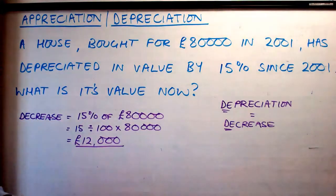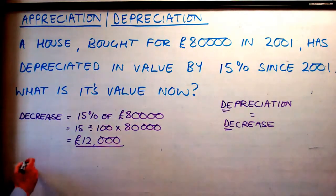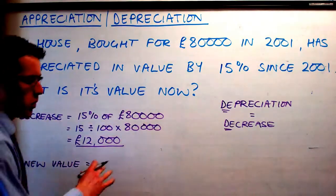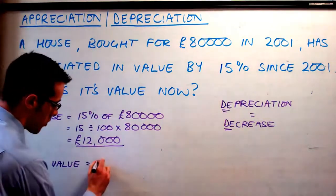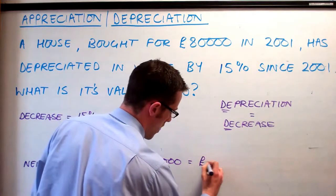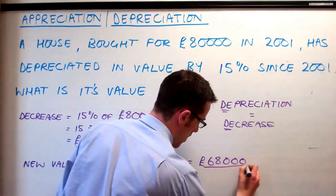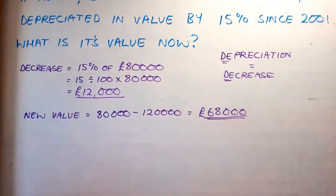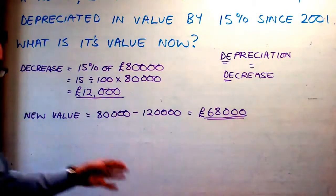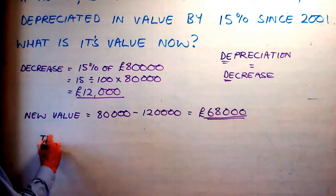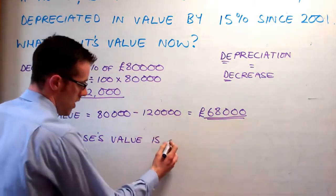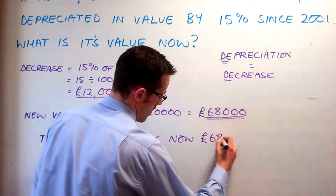The house isn't worth £12,000 — that's been the decrease, so we need to work out the new value. Just as with increase we added on, with decrease we take away. So that's £80,000 minus £12,000, leaving £68,000. The question was asked in a story context, so we show our understanding by writing: the house's value is now £68,000.